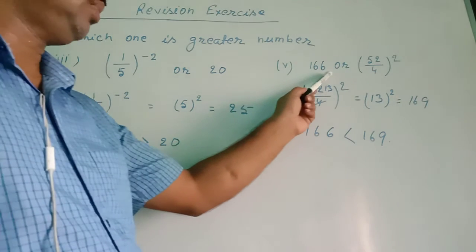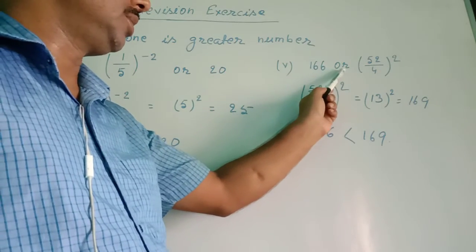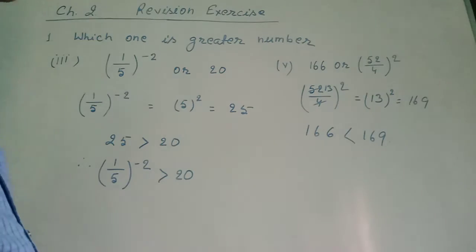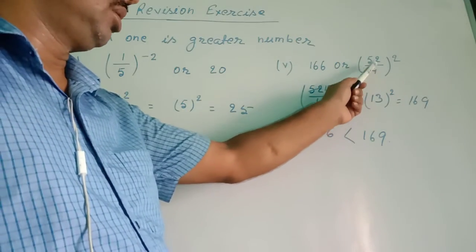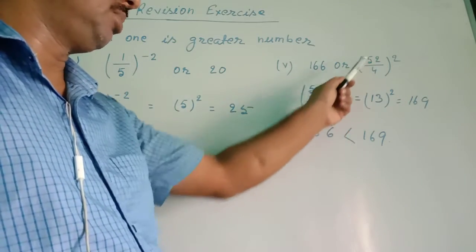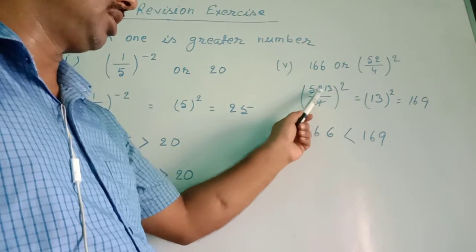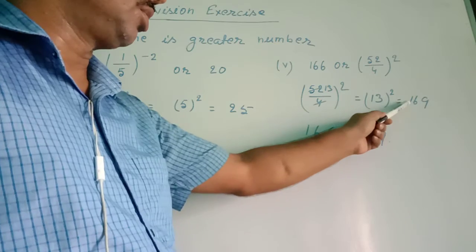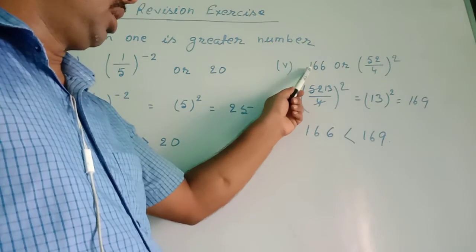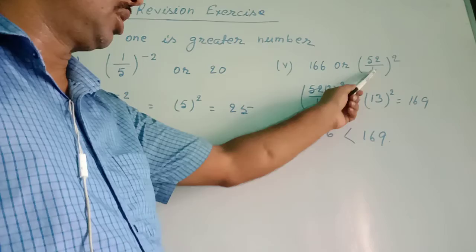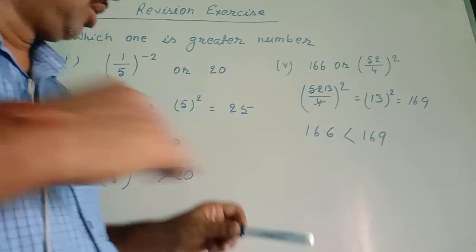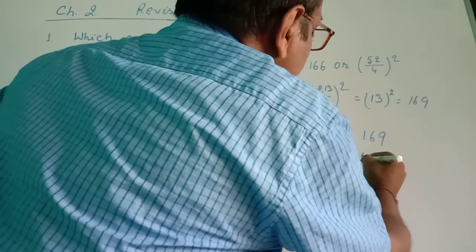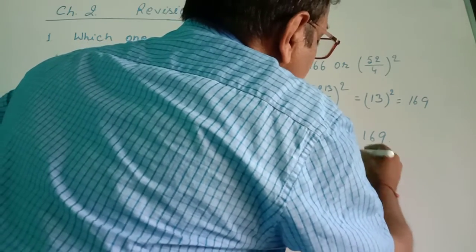Roma number 5: which is greater — 166 or (52/4)^2? First I simplified 52/4: cancelling, 52/4 gives 13. So this becomes 13^2 equals 169. Comparing: 166 is smaller than 169. Therefore 166 is smaller than (52/4)^2.